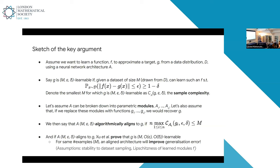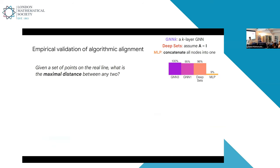The theorem they were able to prove says: if you have M-epsilon-delta algorithmic alignment of A to G, then you can learn G with this architecture in big-O of epsilon and big-O of delta for the same number of examples. You're guaranteed to have equal or better error for the same number of training examples if you align your architecture properly. There are a few assumptions: the learned function is stable in terms of which dataset you sample, and your learned modules are continuous. To empirically validate this, they had a progressive set of more and more challenging algorithmic problems and asked various types of neural networks to fit them. The types of models were DNNs run for K layers, deep sets — a GNN where the adjacency is just the identity, so you're not using the graph structure — and MLPs, where you concatenate all the nodes together without being mindful of node boundaries at all.